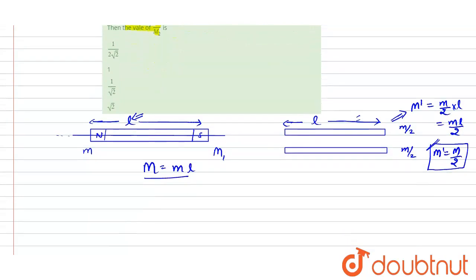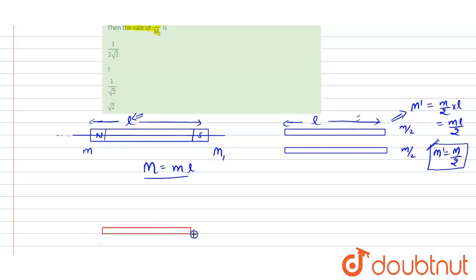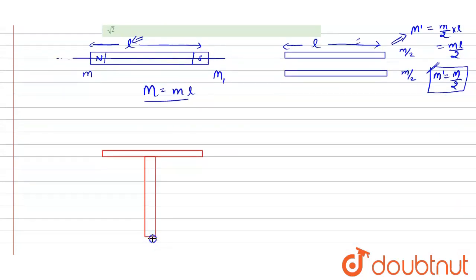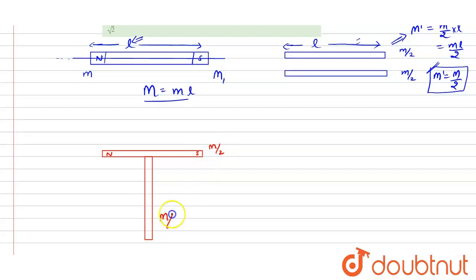Now in this question we have given that these two bar magnets are placed perpendicular to each other. Let us draw the diagram for this. This is the first bar magnet, and another bar magnet is placed perpendicular to it. This is the perpendicular bar magnet. Now this will have some magnetic moment — let us consider this is the north pole and this is the south pole — and it will have a magnetic moment of M/2, and this will also have a magnetic moment of M/2.